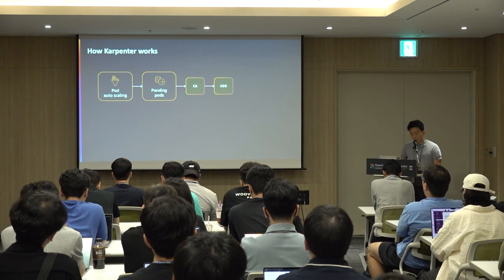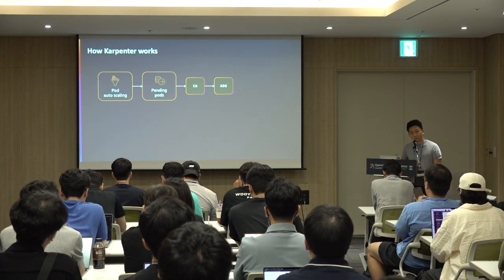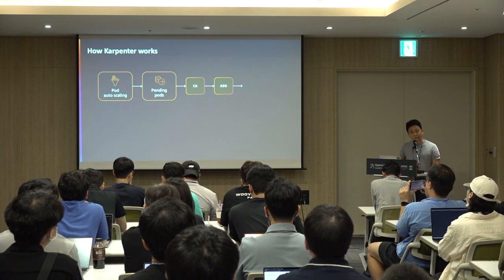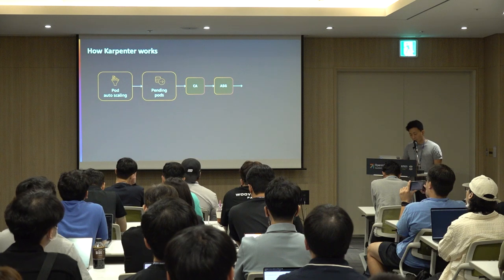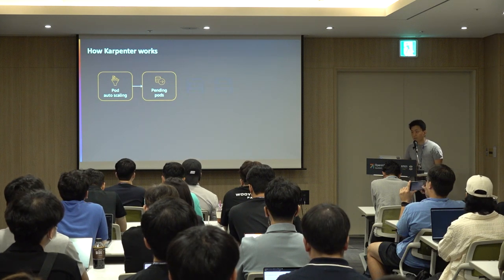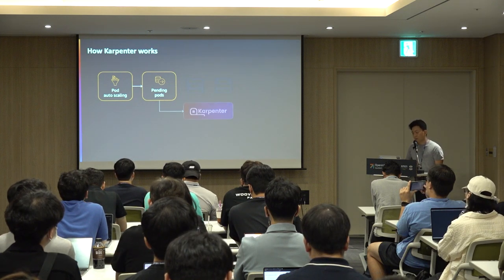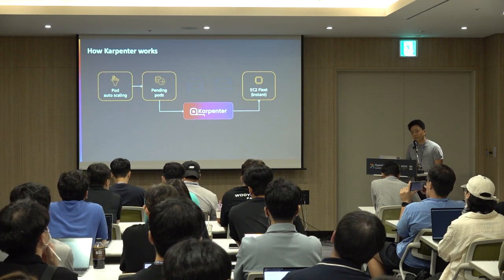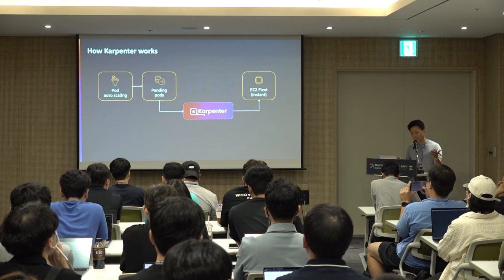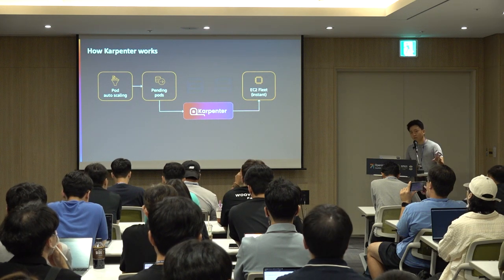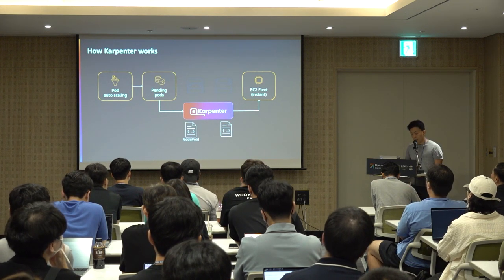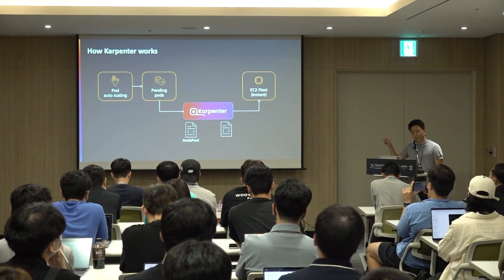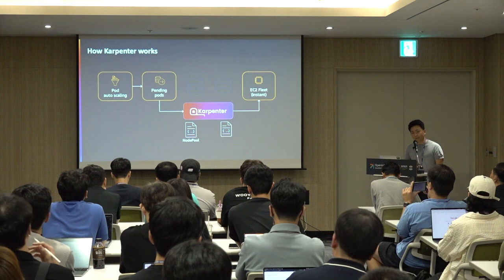Previously, when there are pending pods, Cluster Autoscaler talked to an auto-scaling group which then created EC2 instances. But Karpenter, because there is no auto-scaling group, directly calls the EC2 fleet API to provision worker nodes based on pending pods that cannot be scheduled into your existing capacity. This is based on two CRDs called NodePool and EC2NodeClass.